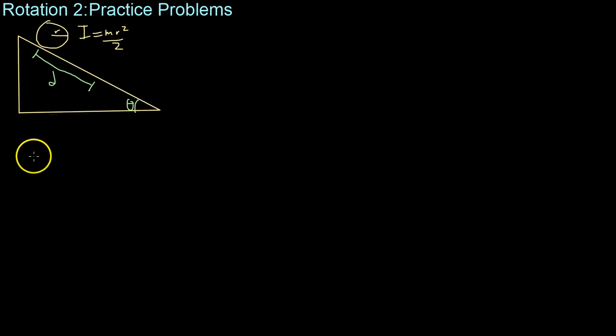All right, so moving on to the last problem in this section, we're going to be dealing with something with a non-negligible moment of inertia rolling down a ramp. In this case, we have a disk with its moment of inertia equals its mass times its radius squared all over 2. And what we want to do is find, first of all, its acceleration down the ramp, and then if we have time, the minimum coefficient of friction such that it can roll without slipping down this ramp.